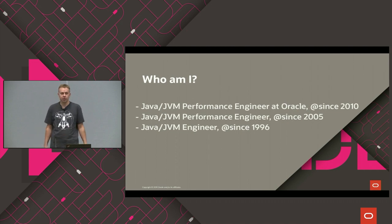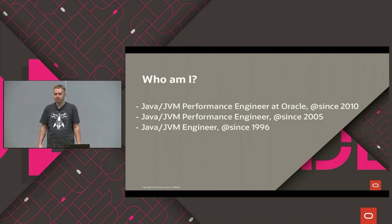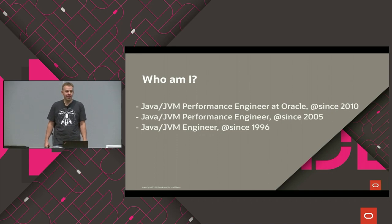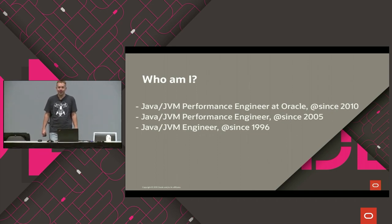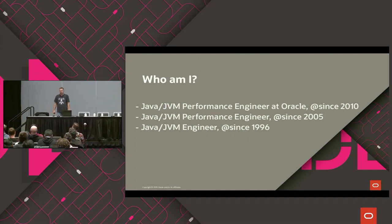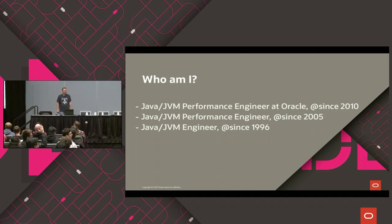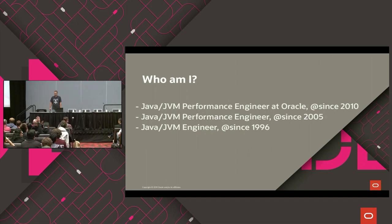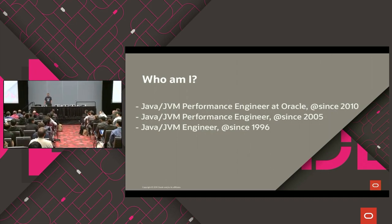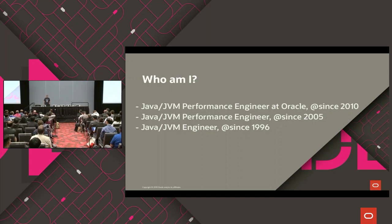Starting from the fresh one: 13, 12, 11, 10, 9, 8, 7, 6, 5. Oh, it's not a zero. That's awful.